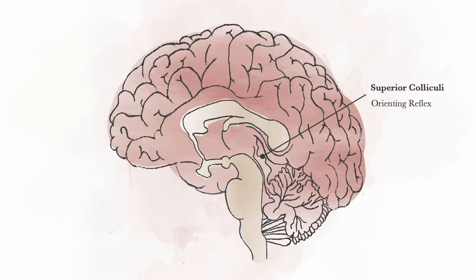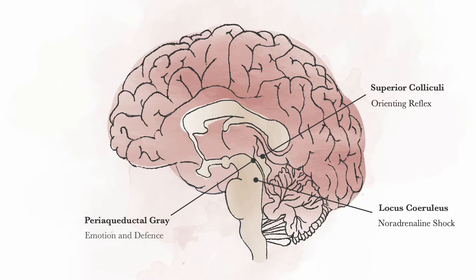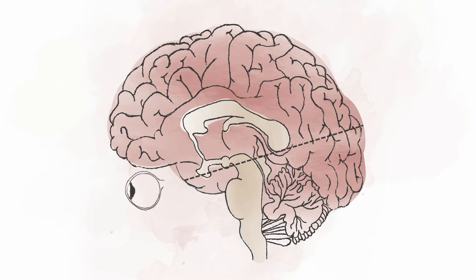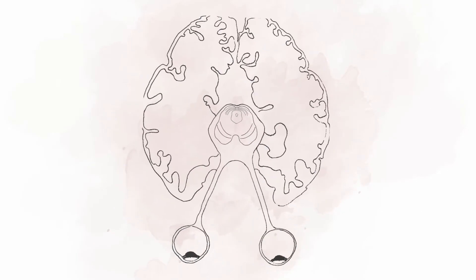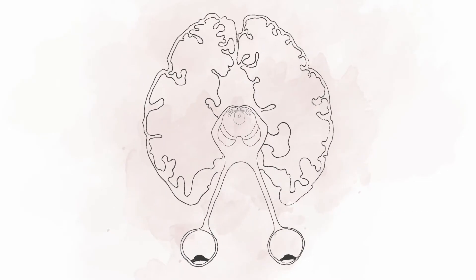The superior colliculi, responsible for the orienting reflex. The locus coeruleus, the initiator of shock reactions. And the periaqueductal grey, the generator of emotion and defense responses. To follow the brain activation that unfolds during trauma, we need to be able to see these structures more clearly, so we'll take this cross-section view and instead look down at the brain stem. What is the first response to something novel happening?